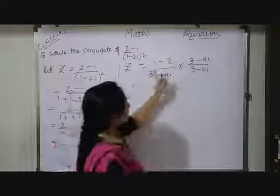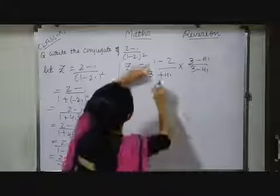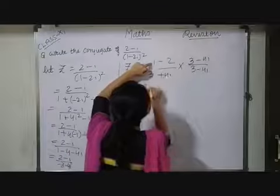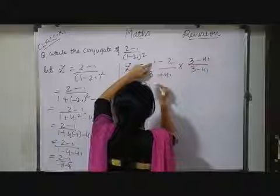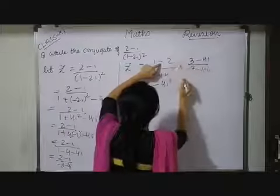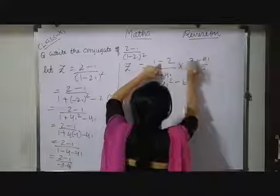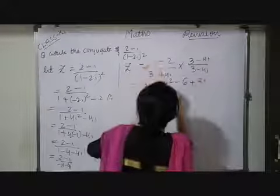So, if I multiply here we have to do gradual multiplication of numerator and denominator also. So, i into 3, 3i plus minus minus i into 4i, 4i square minus plus minus 3 to the 6 minus minus plus 2 4s are 8i upon.